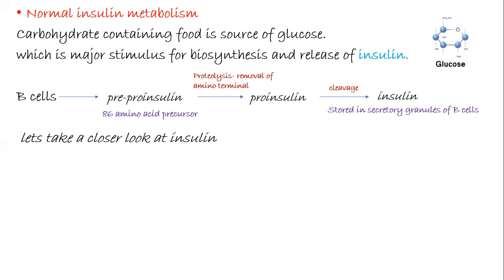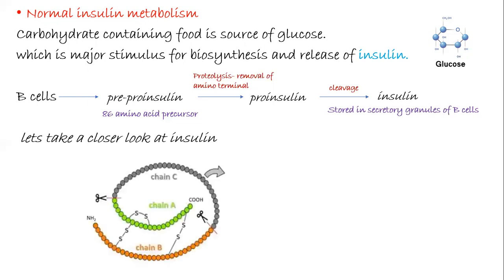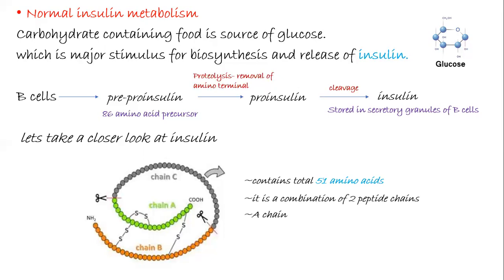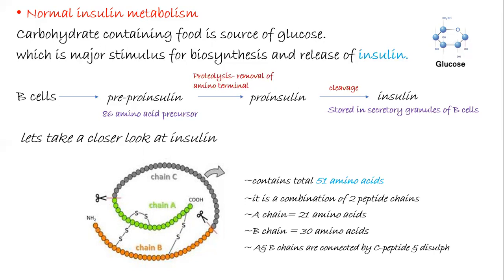Now let us take a closer look at insulin. Insulin is a polypeptide containing about 51 amino acids, made up of two polypeptide chains. Chain A is made up of 21 amino acids and chain B is made up of 30 amino acids. Chain A and B are linked together by a C-peptide and disulfide bonds. This C-peptide is not easily cleaved by enzymes.